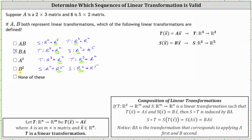That is how we approach this problem as a composition of two linear transformations. Another option is to find the product of the two matrices, which gives one transformation matrix equivalent to performing the two transformations. If the matrix multiplication is defined, the corresponding linear transformations are defined; if the matrix multiplication is undefined, so are the linear transformations.